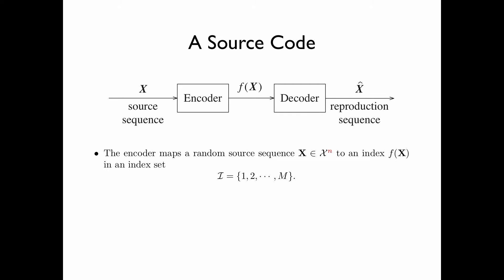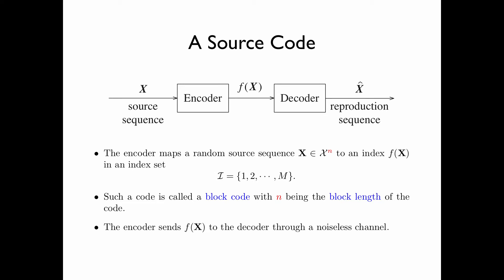The encoder maps the random source sequence to an index f of x in an index set script i, which consists of the integers 1, 2, up to m. Such a code is called a block code, with n being the block length of the code. The encoder sends f to the decoder through a noiseless channel. Then based on the index received, the decoder outputs x-hat as an estimate of x, called the reproduction sequence.